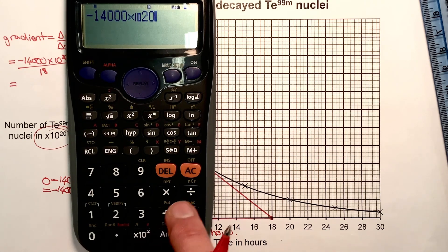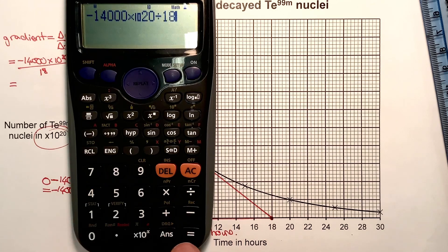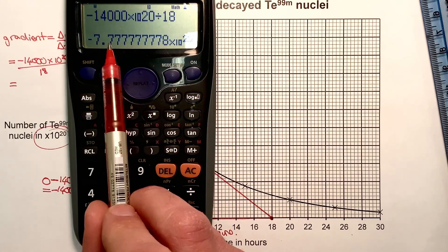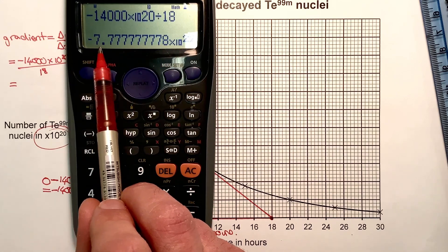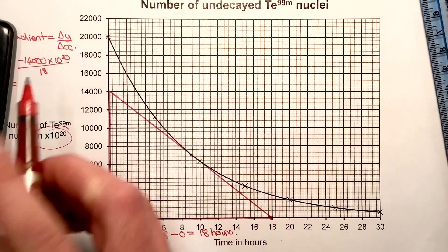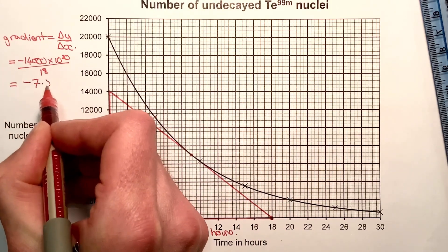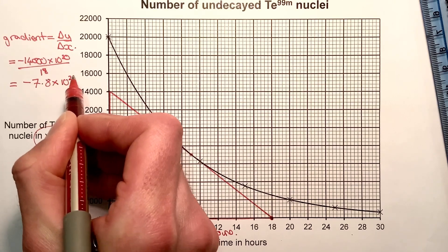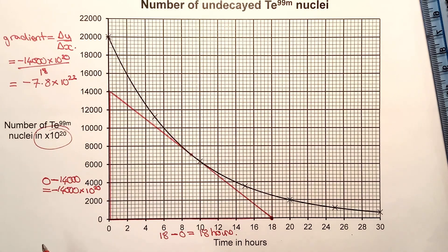Now I can do divided by 18, press equals, and it's given me my answer in standard form, which I'm going to round to minus 7.8. That gives me minus 7.8 times 10 to the 22. I can leave that in standard form, as the calculator gave it to me.